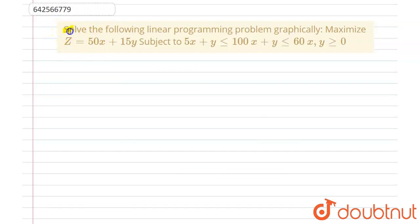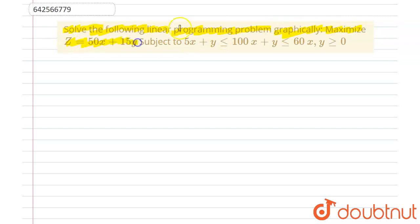So the question says: solve the following linear programming problem graphically. Maximize z equals to 50x plus 15y, subject to 5x plus y should be less than or equal to 100, and x plus y should be less than or equal to 60, and x, y should be greater than or equal to 0.